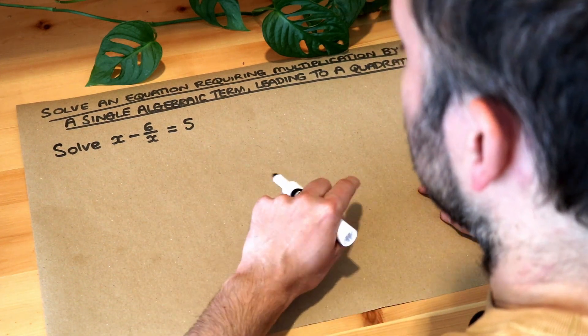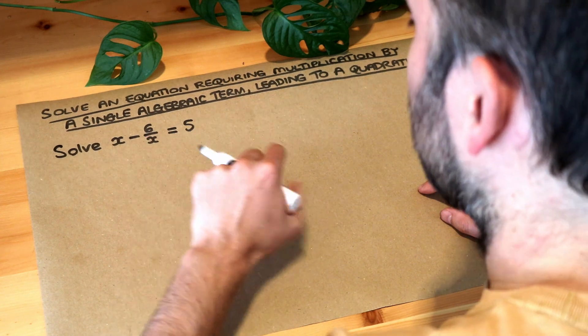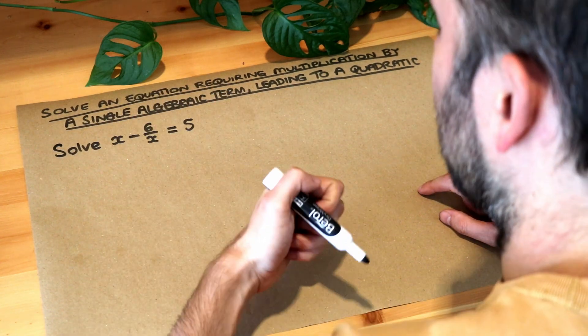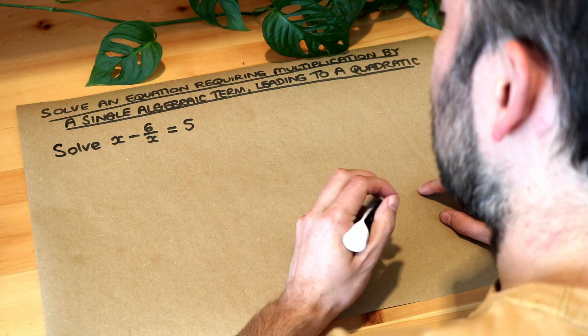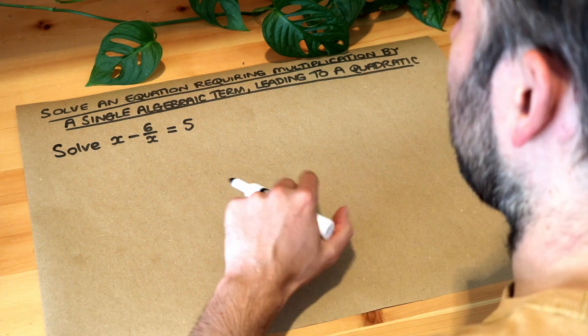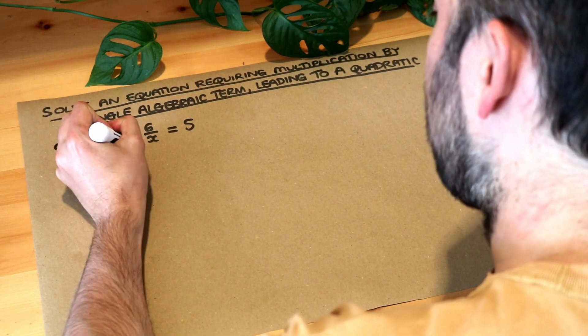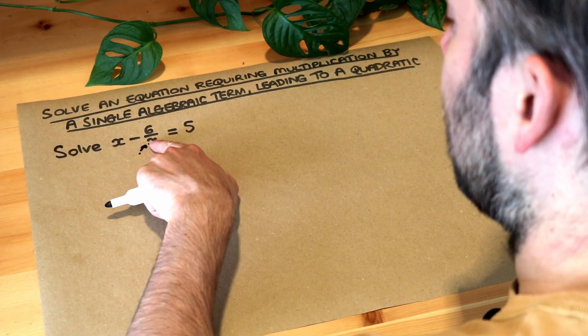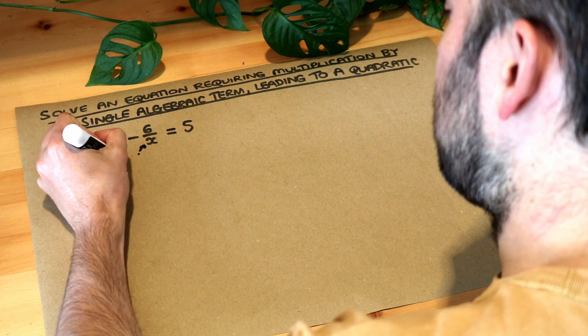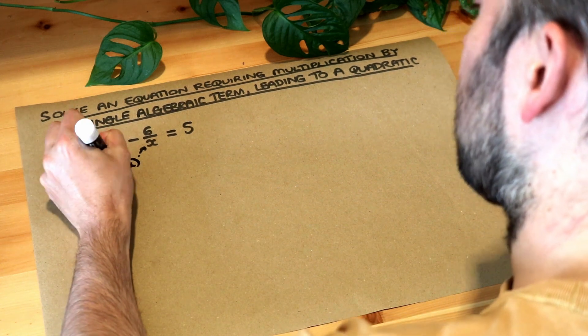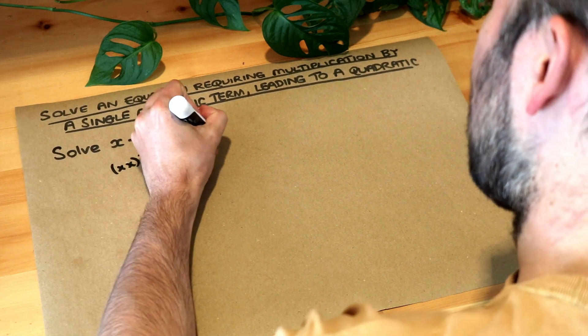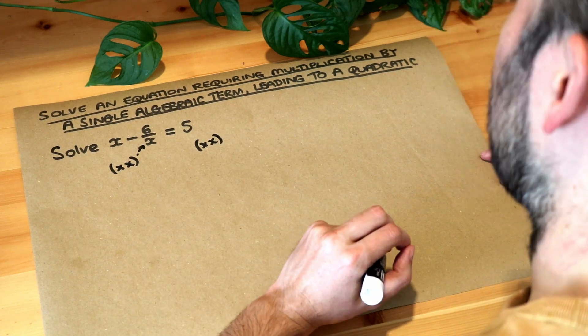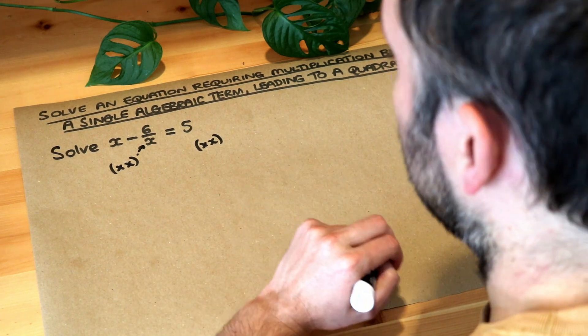Usually our instinct when we have an equation with a fraction in it is to get rid of the fraction, and the way we do that is by multiplying both sides of the equation by whatever the denominator is. We can see the denominator here is x, so we simply multiply both sides of the equation by x and that means we'll have an equation which doesn't have a fraction in it anymore, and then it's easier to solve.